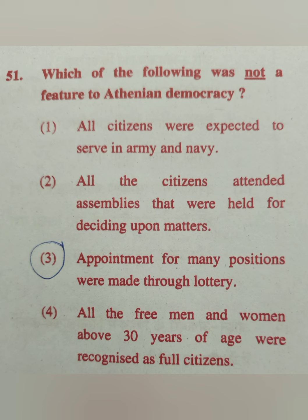Question 51: Which of the following was NOT a feature of Athenian democracy? Option 1: All citizens expected to serve in army and navy. Option 2: All citizens attend assemblies to decide on matters. Option 3: Appointments for many positions made through lottery. Option 4: All free men and women above 30 years recognized as full citizens. Women received citizenship much later, so option 4 is the answer — it was NOT a feature.